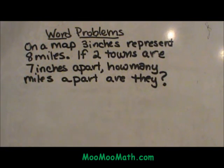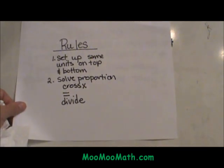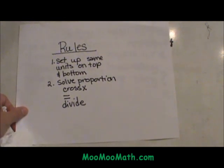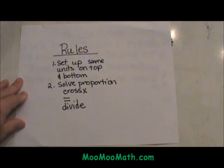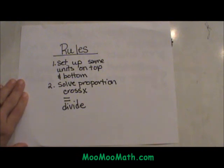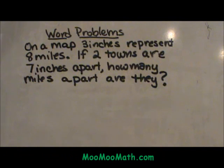Rather than working the problem this time, I just wanted to present the problem. Now let's look at the rules and then we are going to work the problem in slow-mo. First, we are going to set up a proportion where we have the same units on the top and matching units on the bottom. Then we are going to solve that proportion using cross multiplication, set those two equal to each other, and then divide by the lead coefficient. So let's go back and work this problem.